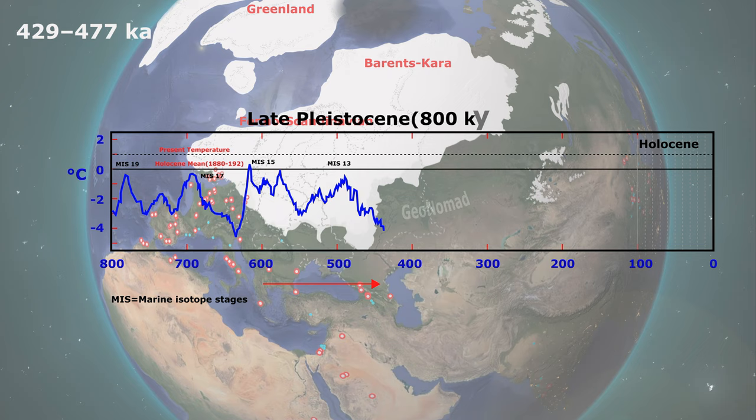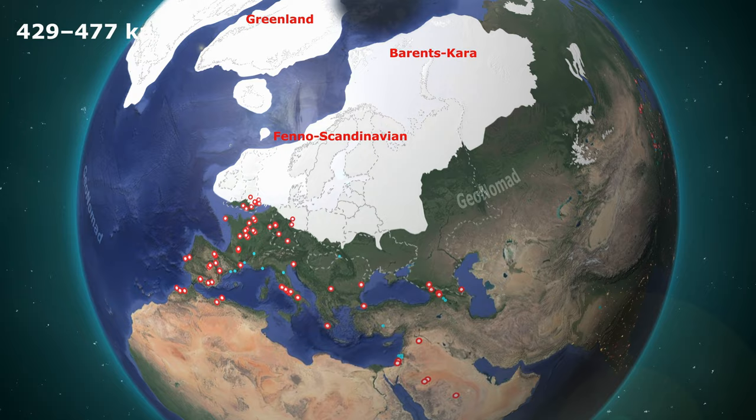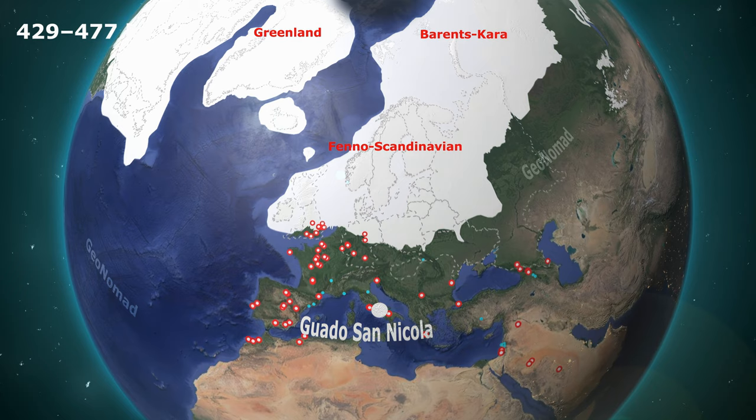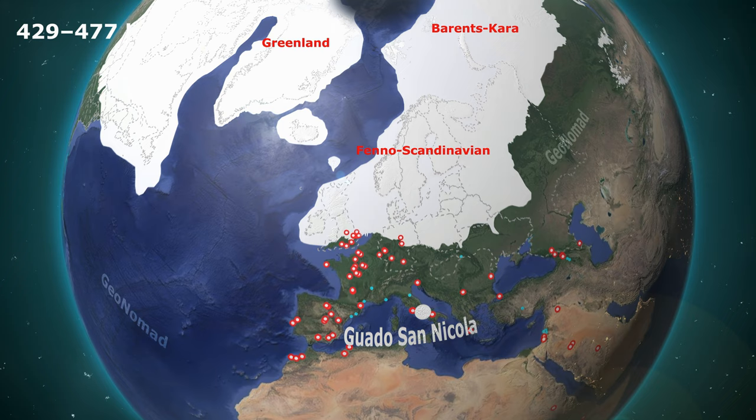Scholars estimate that Neanderthals were born in Europe around this time. At the Guado San Nicola site in Italy, Neanderthal remains dating up to 400,000 years ago have been unearthed. Around this time, Britain was covered mainly by glaciers, and in Europe, Homo erectus, Homo heidelbergensis, and Neanderthals likely shared habitats.